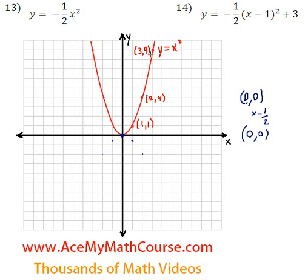Next point over is 3, 9. 9 times negative half would be negative 4.5. So 1, 2, 3, 4 and a half.